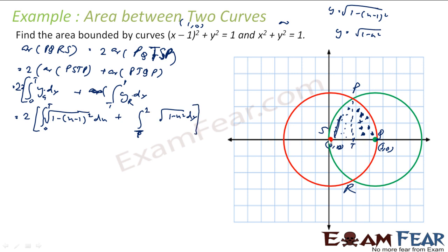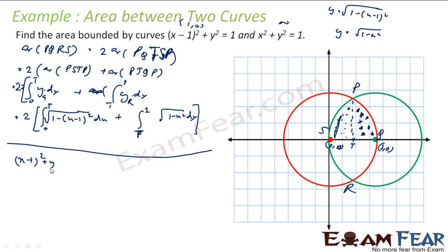Before solving this, I need to find the value of T. T is the x-coordinate of the intersection of the two circles. Setting (x-1)² + y² = 1 and x² + y² = 1, and subtracting, we get (x-1)² - x² = 0, which gives 2x - 1 = 0, so x = 1/2. Therefore T = 1/2.